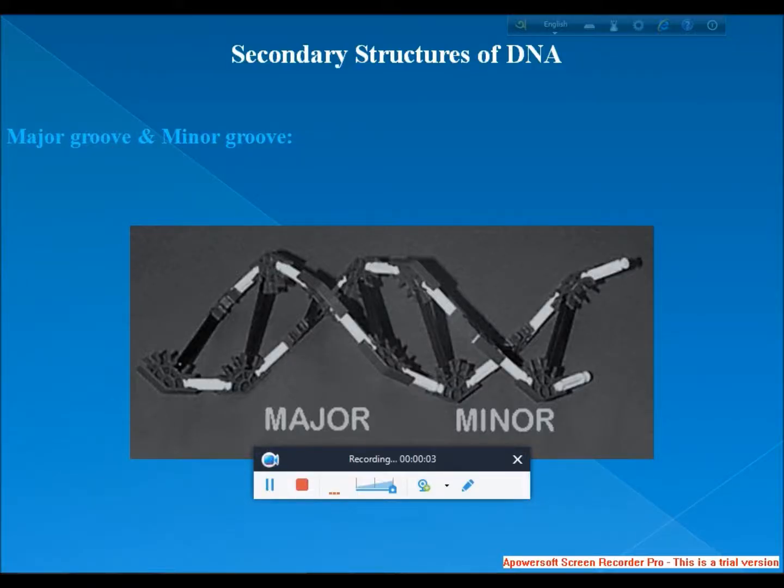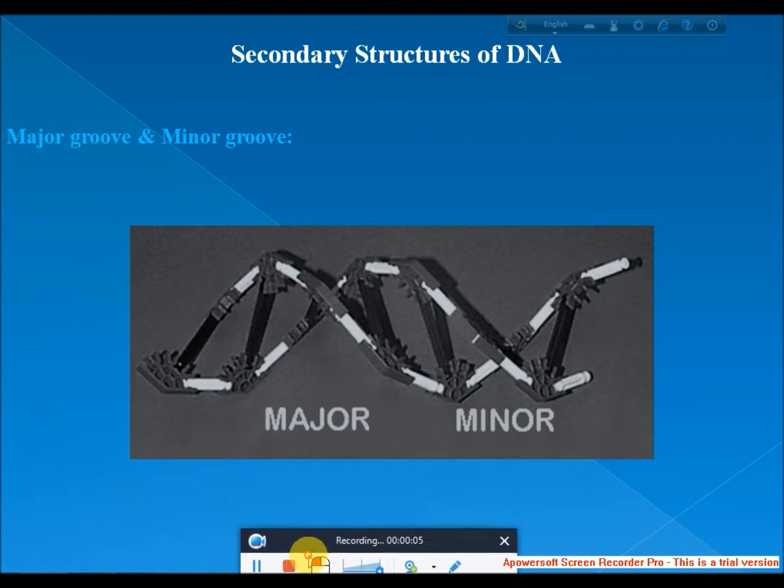Welcome friends, welcome to the Knowledge Club Online. Today I am going to discuss the secondary structures of DNA. First, I'll discuss the major groove and the minor groove. Double helical nucleic acid molecules contain two grooves called major groove and minor groove. These grooves arise because the glycosidic bonds of a base pair are not diametrically opposite each other.